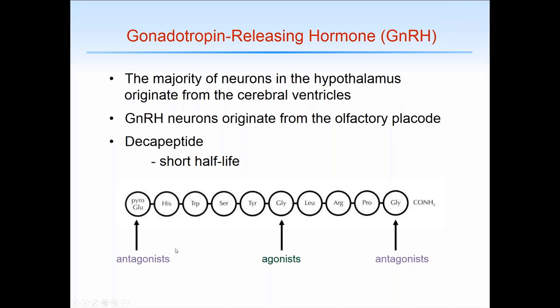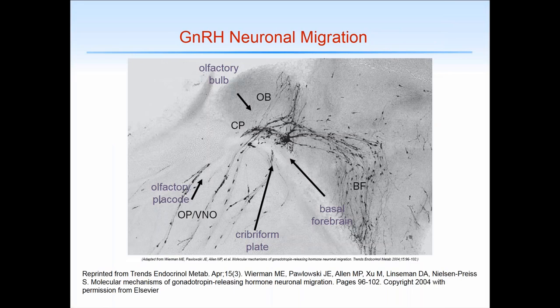The position 1 and position 10 of GnRH tend to be locations of changes in amino acid composition to create antagonists, while the sixth position is critical for creation of agonists. The GnRH neurons have a unique birthplace — they start in the olfactory placode along with the olfactory neuron, travel up, cross the cribriform plate, and the majority curve around down into the basal forebrain, ultimately reaching the mediobasal hypothalamus where they send projections down to the median eminence to impact gonadotrope function.